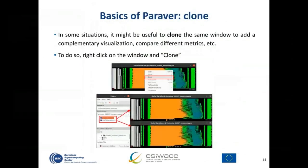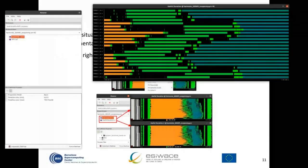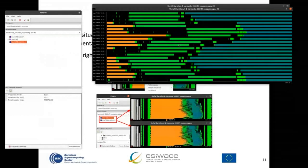Clone is a powerful feature, especially when you want to generate more advanced views. With Parabert you can generate additional configurations and combine two views to generate a histogram. Sometimes it's useful to create a copy of the visualization you already have using the clone functionality. For example, if we open the useful duration view, we can right-click and press clone and a new one will be created with a different name.